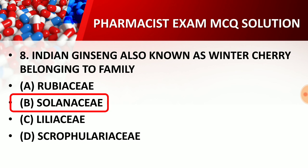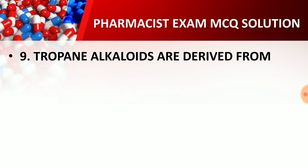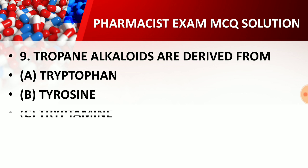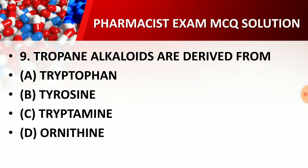Indian ginseng is also known as winter cherry, and its family is Solanaceae. Question nine: tropane alkaloids are derived from — option A: tryptophan; option B: tyrosine; option C: tryptamine; option D: ornithine. The right answer is option D — ornithine. Tropane alkaloids are derived from ornithine.